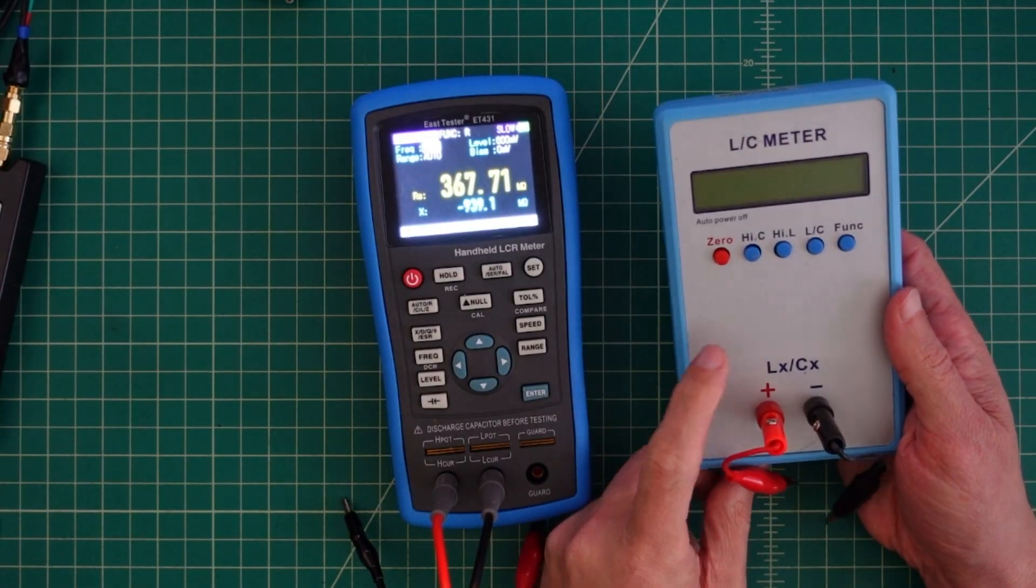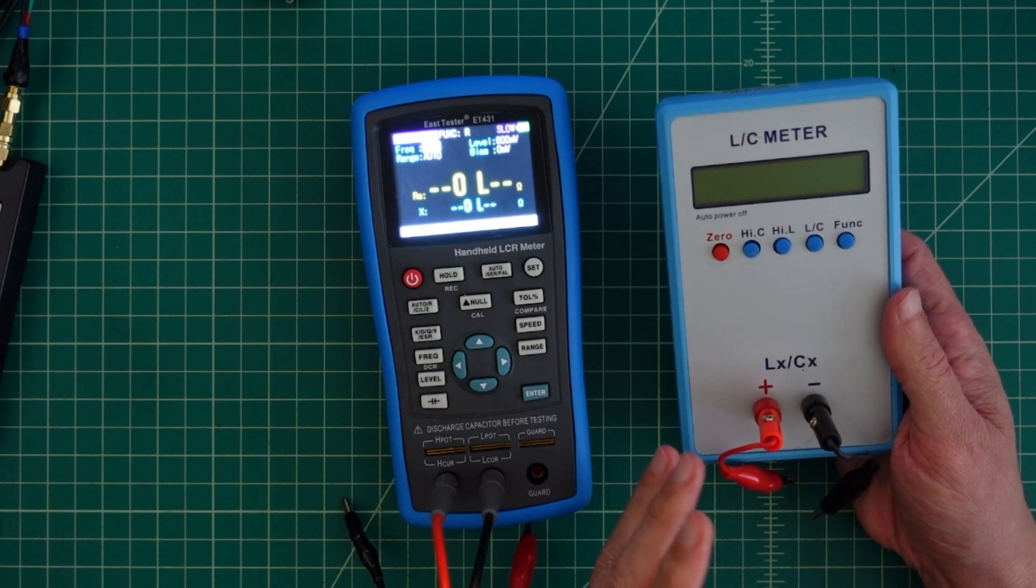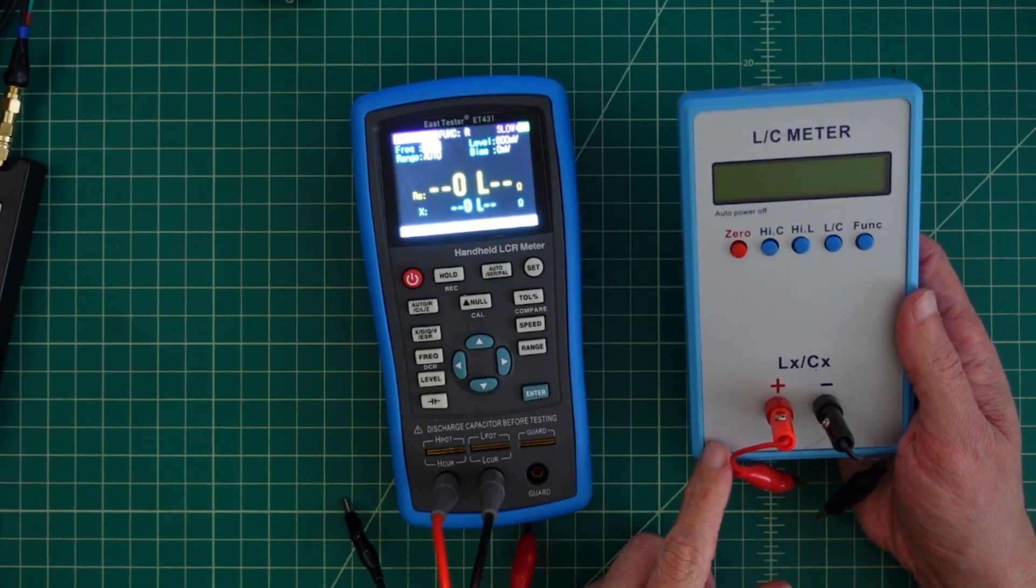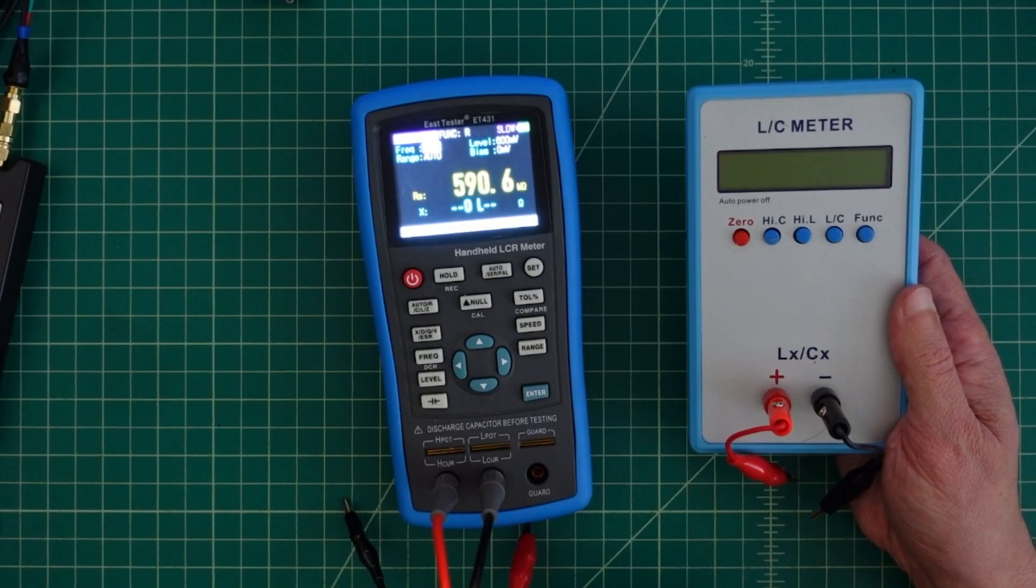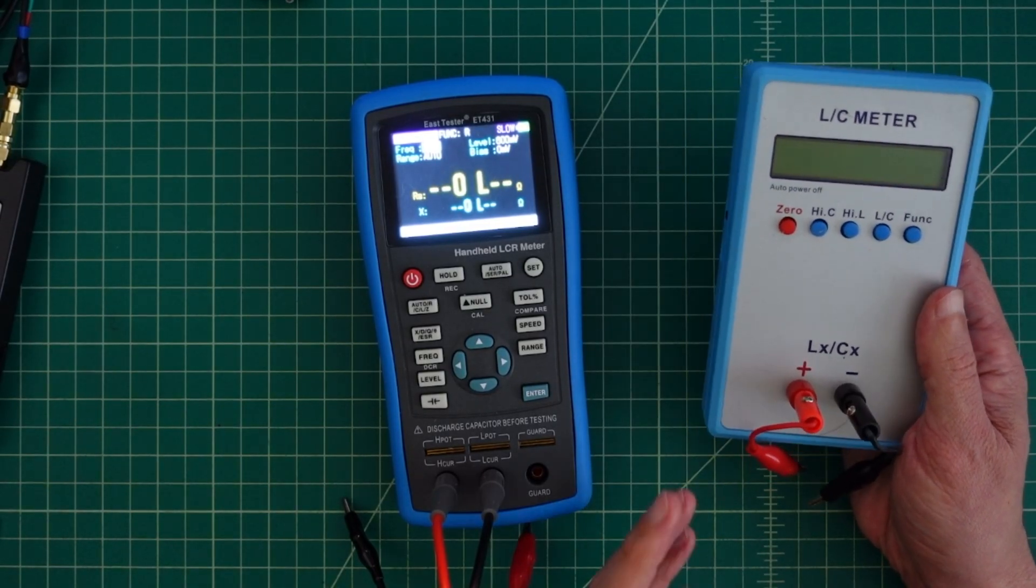So I did a video complaining about how I was frustrated with this LC meter which really isn't that bad and it works pretty well. When you get down into lower value components it starts to struggle a little bit and I'm talking very low value components, typically stuff that we would use in UHF and VHF frequencies building filters and things like that.